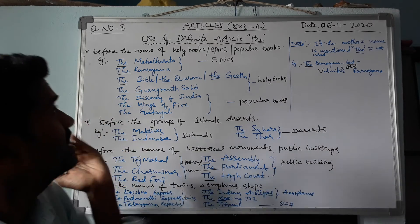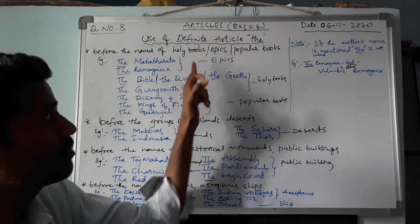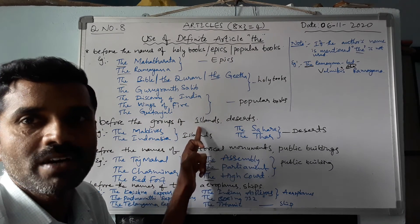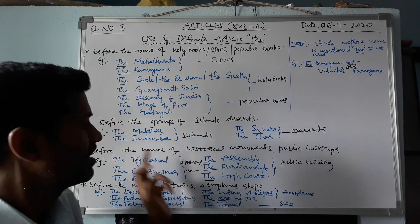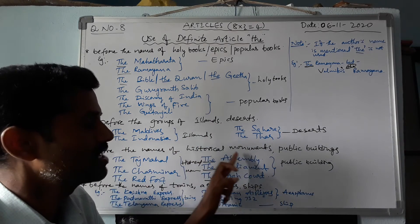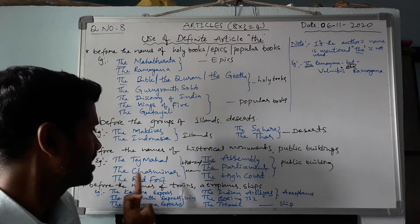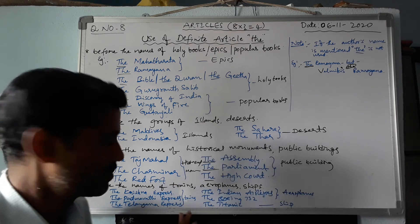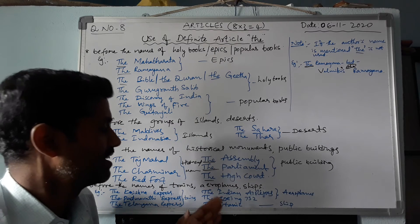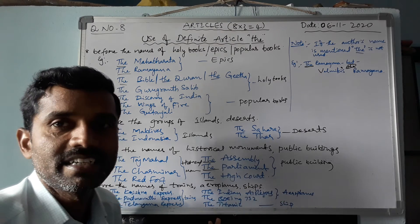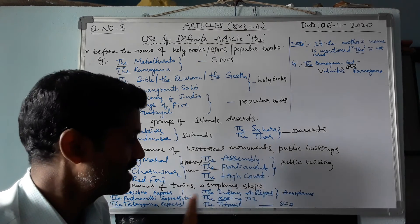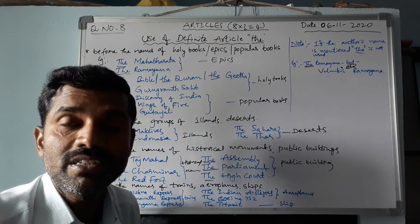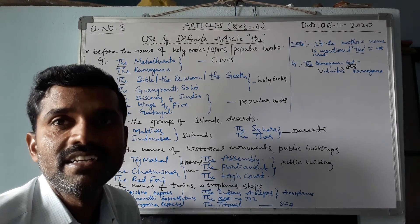To summarize what we have studied today — use of the definite article 'the': before the names of holy books, epics, and popular books; before the names of groups of islands and deserts; before the names of historical monuments and public buildings like the Taj Mahal, Charminar, Red Fort, Assembly, Parliament, and High Court; and before the names of trains, airplanes, and ships. We have some more rules which will be covered in the next class.